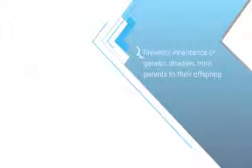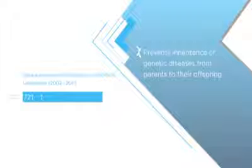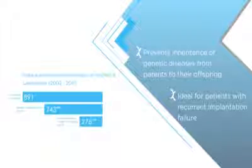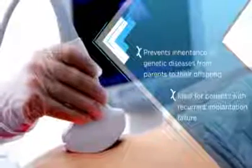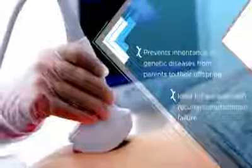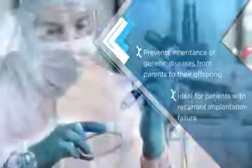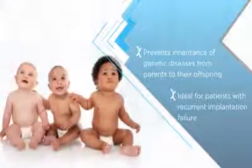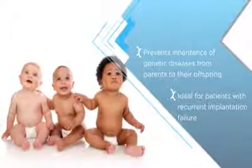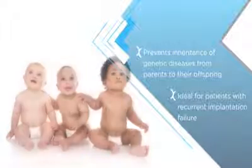PGD is an advanced technique that prevents the inheritance of genetic diseases from parents to offspring. Iviomics has performed over 1000 cycles and has successfully analyzed over 6000 embryos, preventing the inheritance of more than 150 different monogenic disorders. Through PGD, Iviomics lets you choose the best embryos resulting in a healthy offspring.